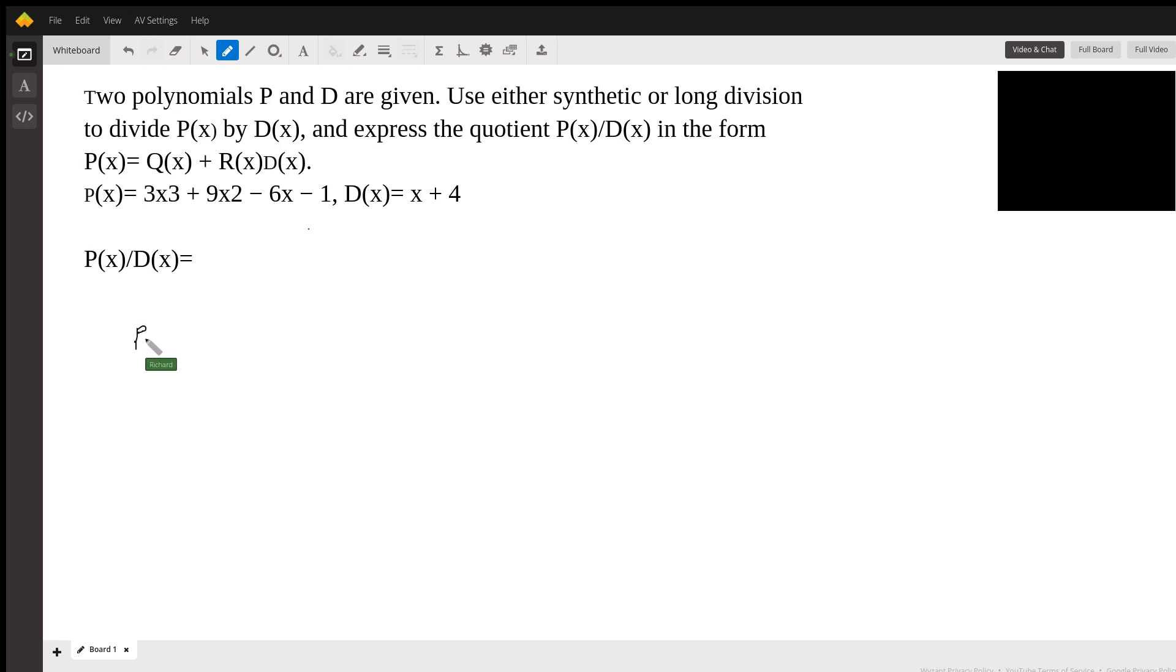So P of X over D of X. It's going to be 3X cubed minus 9X squared minus 6X minus 1 divided by X plus 4.